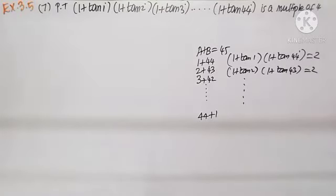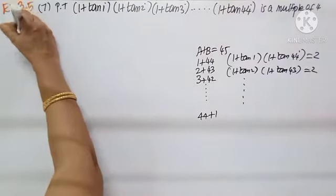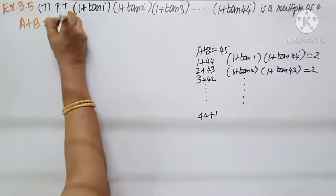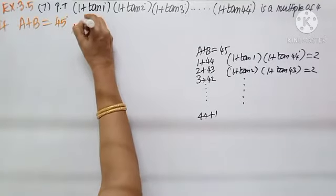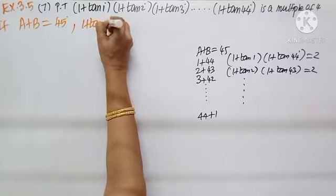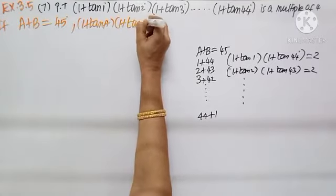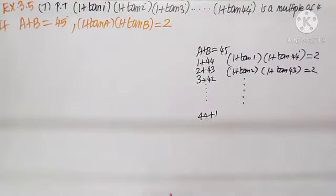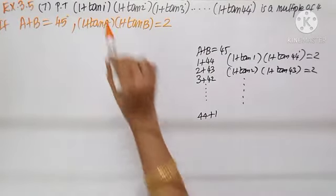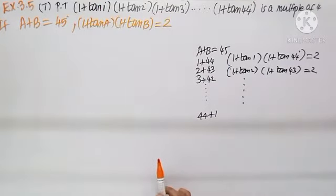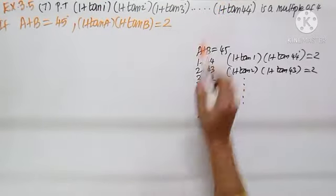Question number 7: prove that 1 plus tan 1 into 1 plus tan 2 into 1 plus tan 3, and so on up to 1 plus tan 44, is a multiple of 4. Recalling the formula from the earlier problem: if A plus B is 45°, then 1 plus tan A into 1 plus tan B equals 2. Here the angles are 1 to 44. We can combine 1 and 44, 2 and 43.